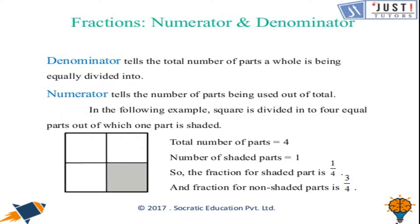The denominator tells the total number of parts a whole is being equally divided into, and the numerator tells us the number of parts being used out of the total.